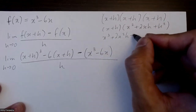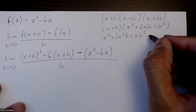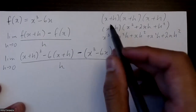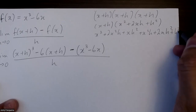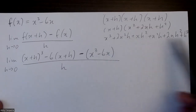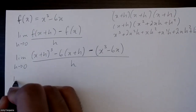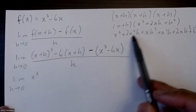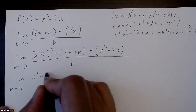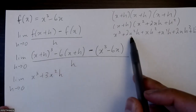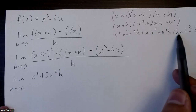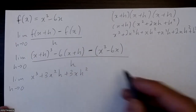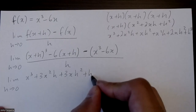Continuing the expansion: x³ + 2x²h + xh² + xh² + x²h + 2xh² + h³. Combining like terms: x³ + 3x²h + 3xh² + h³. So the limit expression becomes: lim h→0 of x³ + 3x²h + 3xh² + h³, where 2x²h + x²h = 3x²h and xh² + 2xh² = 3xh².